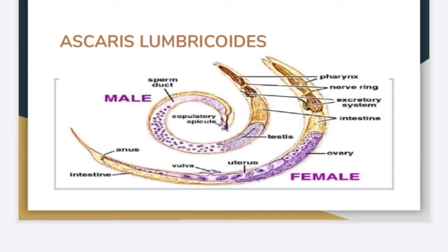You can see in the picture how the posterior end of the male is bent. The male has a common opening known as the cloaca, where both the digestive system and the reproductive system open. In females, the body is longer and straight, and the posterior end is the anus. The digestive system opens at the anus and the reproductive system opens at the genital pore.